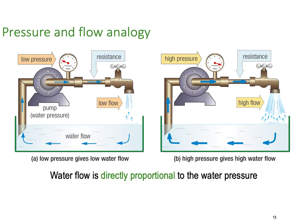Using our water analogy: water flow is directly proportional to water pressure. You can see on our gauge we've got low pressure, and with low pressure we end up with low flow. On the right-hand side, the voltage or pressure has increased tremendously. The resistance — the size of the pipe — hasn't changed, but the flow has increased dramatically because the amount of pressure applied has increased.